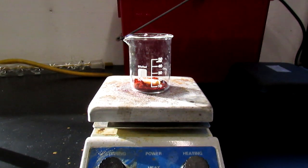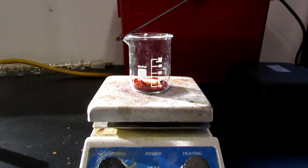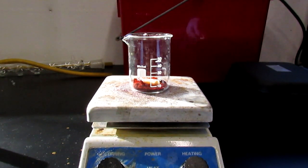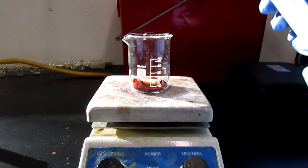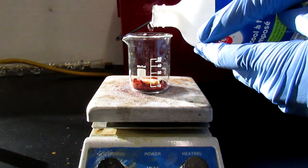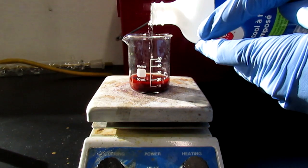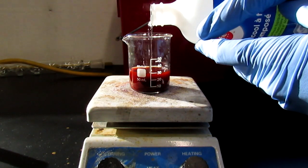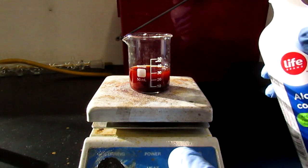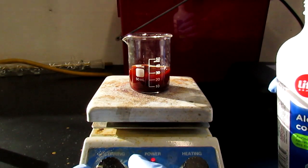All right, I have a 50 mil beaker with a stir bar in it, and I've added the p-cymene ruthenium dichloride dimer to it, and now I'm going to start by adding 30 milliliters of ethanol, and get that heating and stirring, and we'll get that dissolved up.